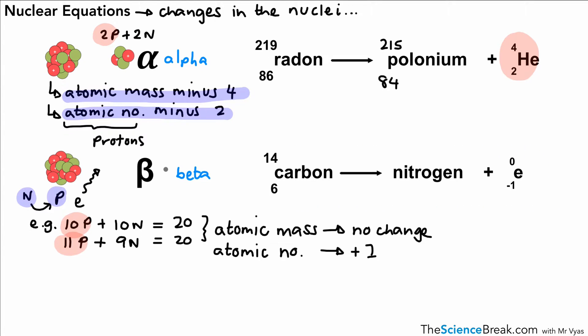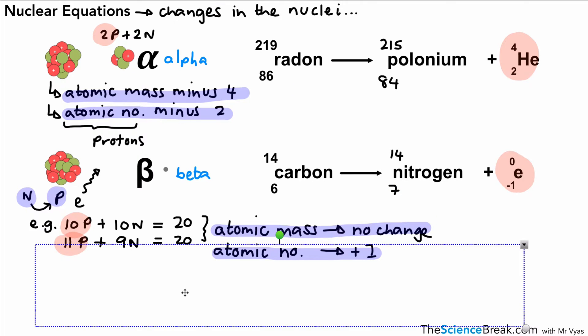Let's look at an equation: carbon decaying into nitrogen by beta decay, shown by the beta particle on the right-hand side. We know the atomic mass doesn't change during beta decay, so it stays as 14. The atomic number is simply a case of adding one, because we've got one more proton. So that's the information for that decay.